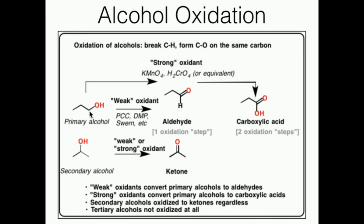The oxidation state is determined by the number of bonds that a particular carbon has to oxygen. This carbon on the primary alcohol has one bond to oxygen, so it's the lowest oxidation state shown here. The same carbon as an aldehyde has two bonds to oxygen — a double bond counts as two bonds — so this is a higher oxidation state than an alcohol. And the carbon in the carboxylic acid has three bonds to oxygen: one bond to this oxygen and a double bond to this oxygen, which makes three total bonds.